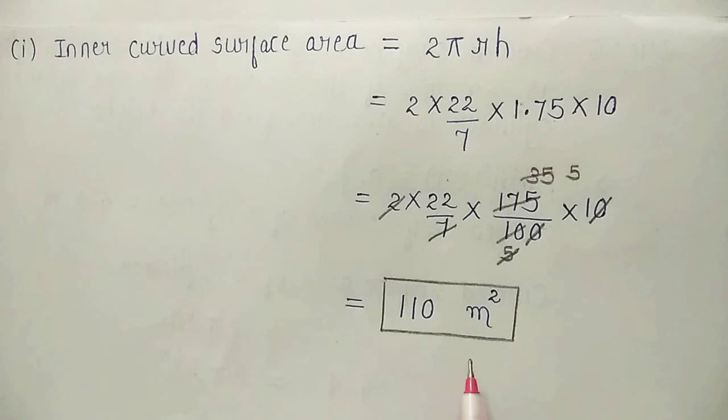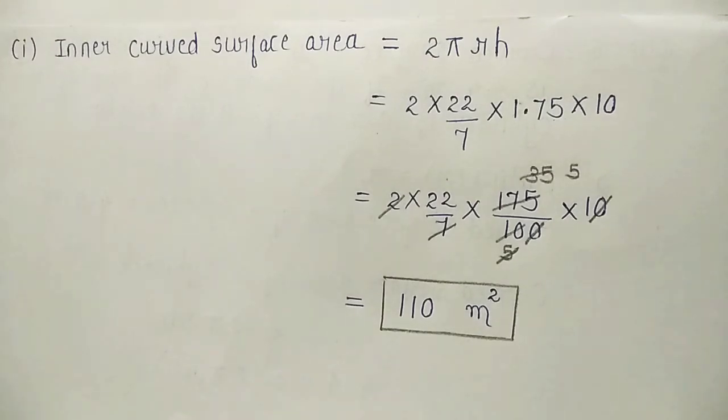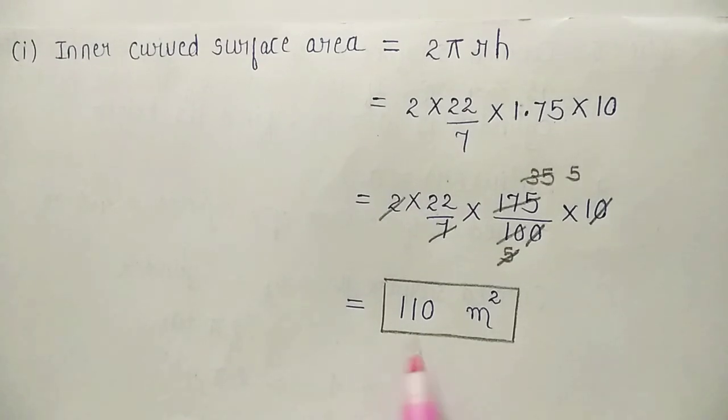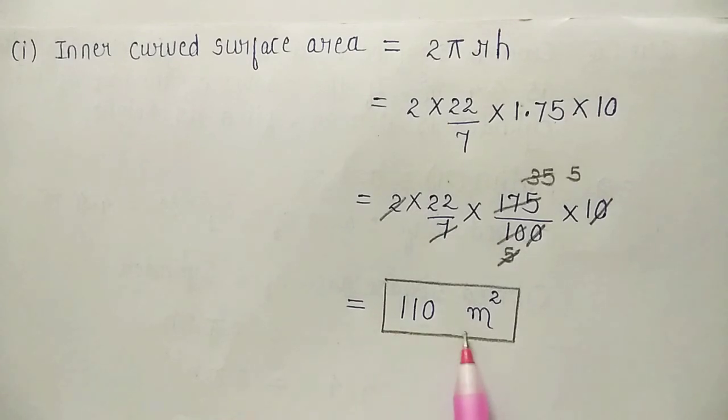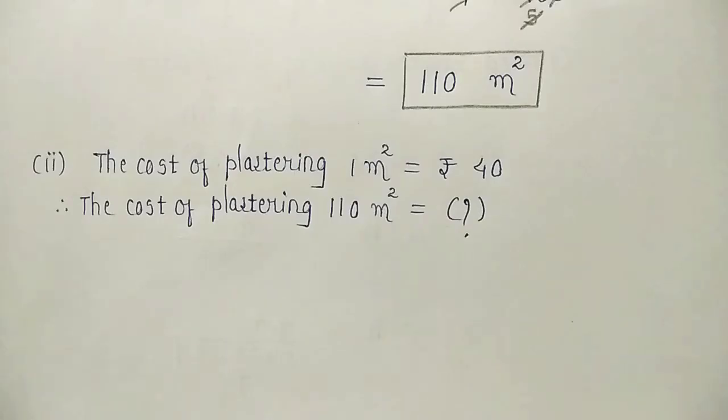in second, we have to find the cost of plastering the curved surface area at the rate of rupees 40 per meter square. Which means cost of plastering for 1 meter square is rupees 40. So, for 110 meter square, how much? Therefore,